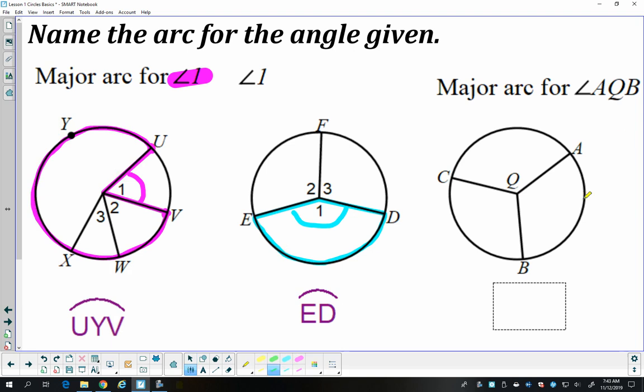And last, the major arc for angle AQB. So AQB is the angle that starts at A, goes towards Q, stops at B. So we're talking about this angle. We want the major arc, so the arc that is greater than 180 degrees, so that would be this one. So that arc starts at A, goes towards C, and ends at B. So I'm going to call that arc ACB.